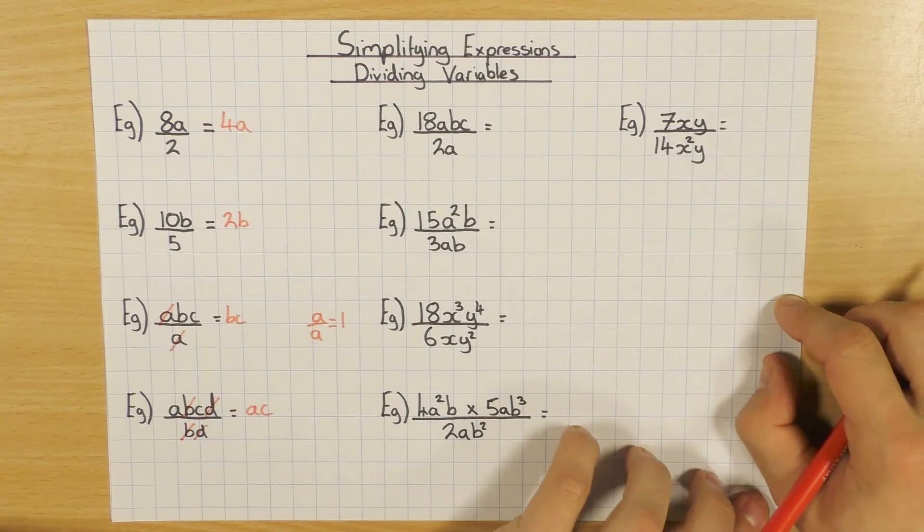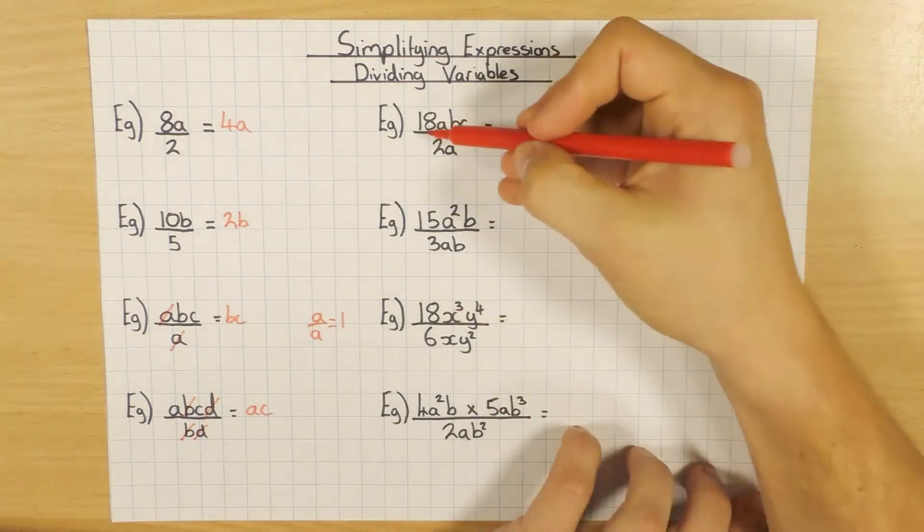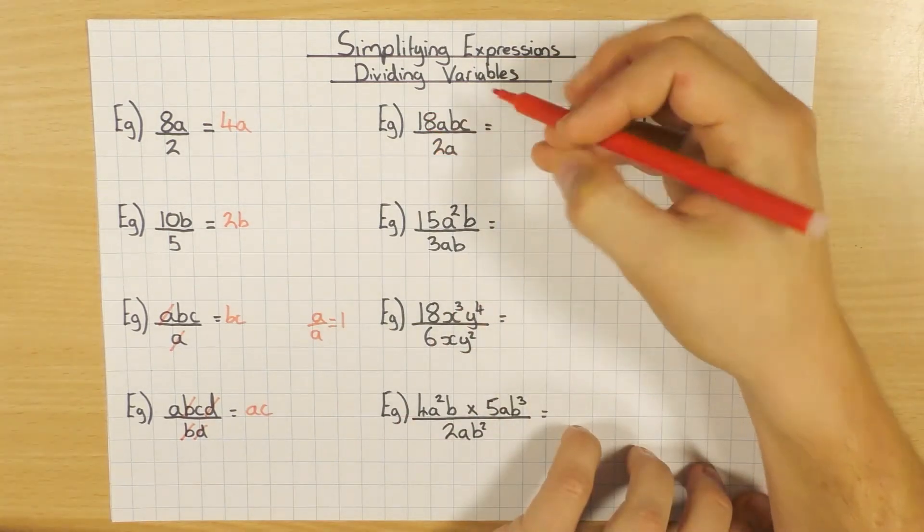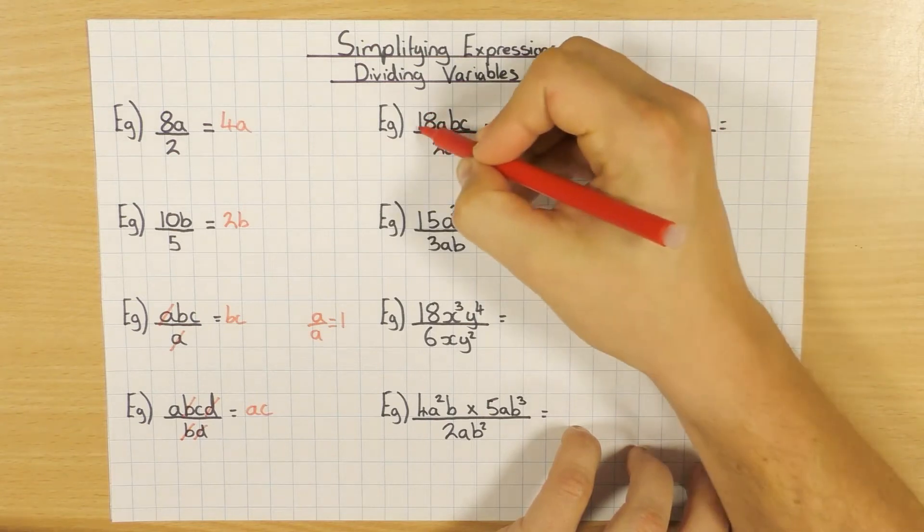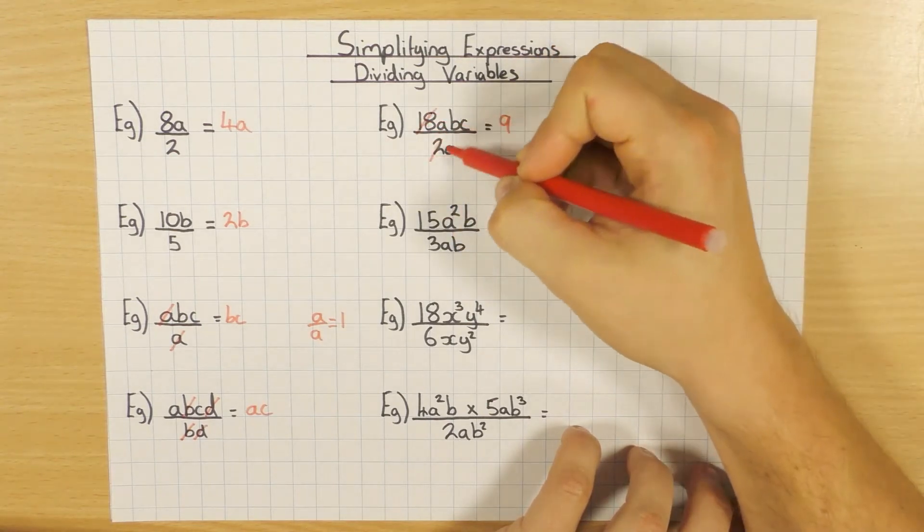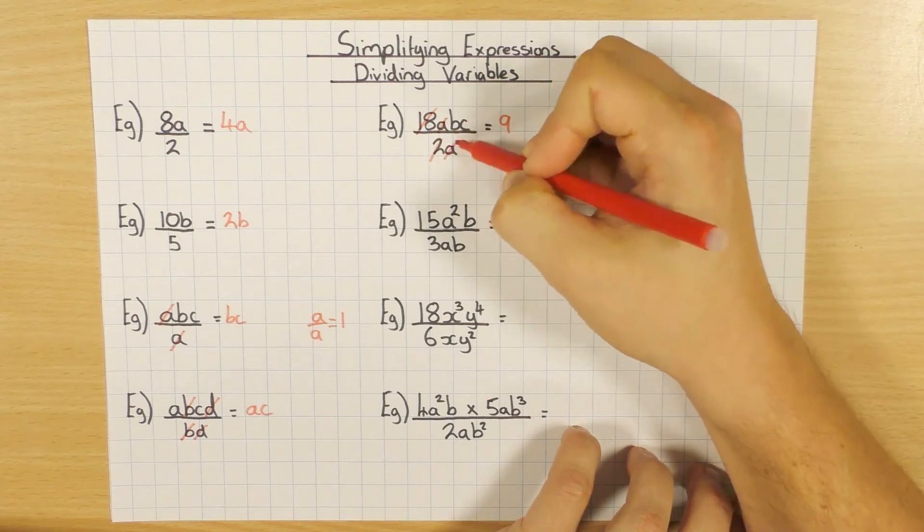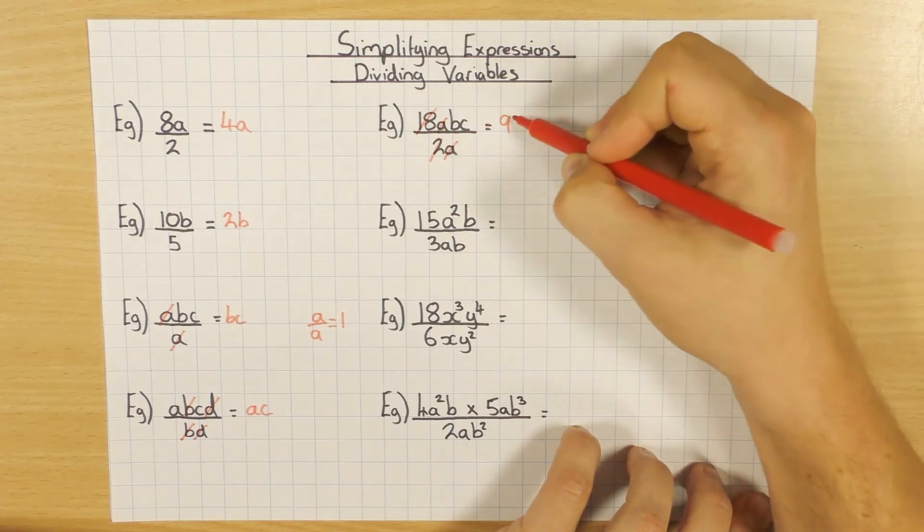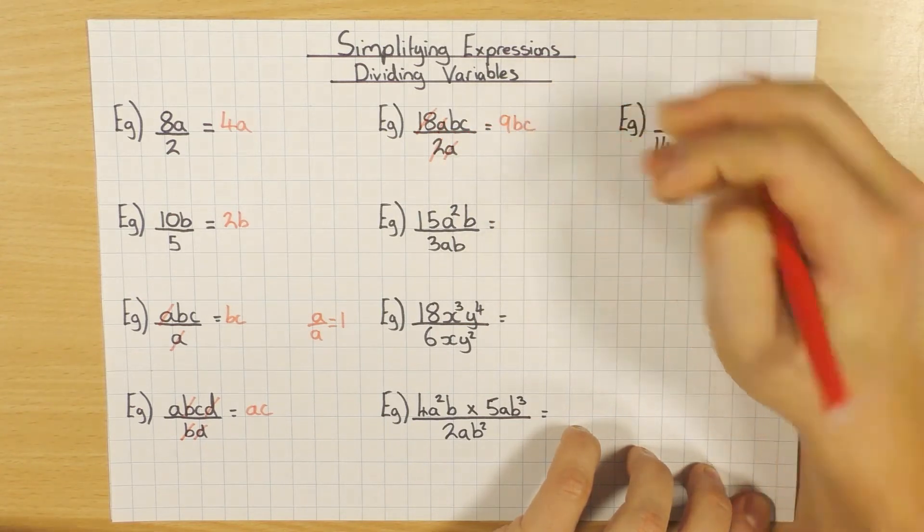This time I put some numbers and variables in, so I'm just going to do the numbers first. 18 divided by 2 is 9, so I've dealt with the numbers, that's done. And I've got the variables now. I've got an a on top, a on the bottom. Nothing else will cancel, so it's 9bc.